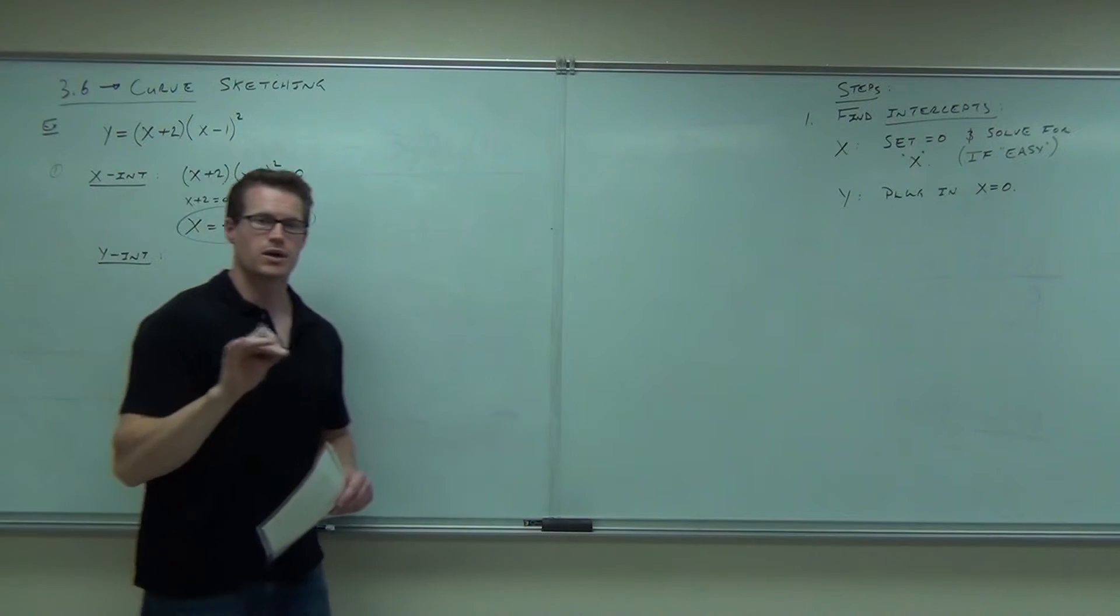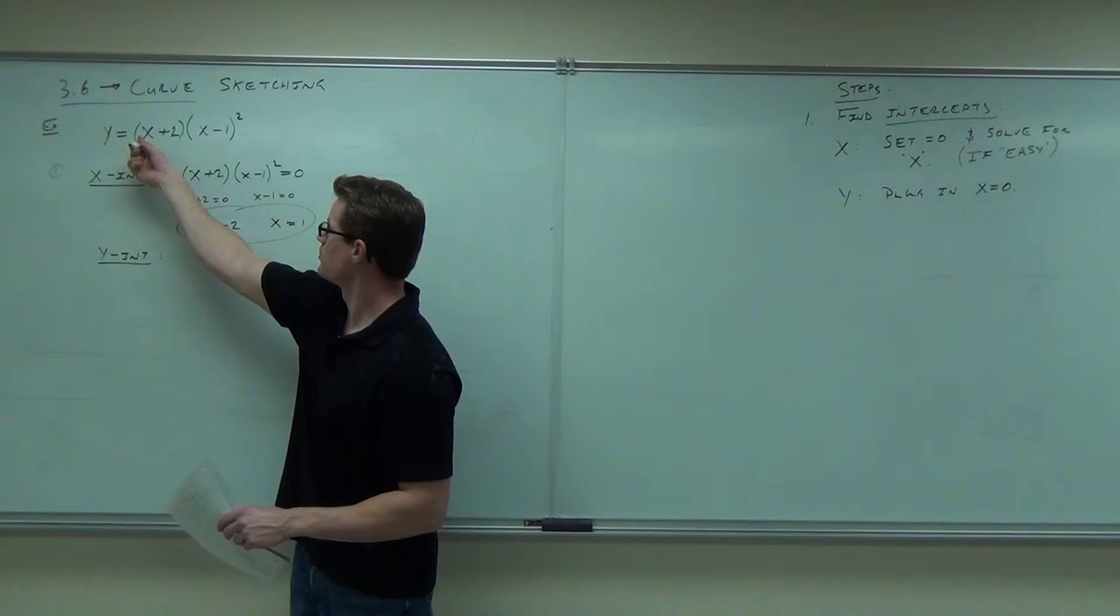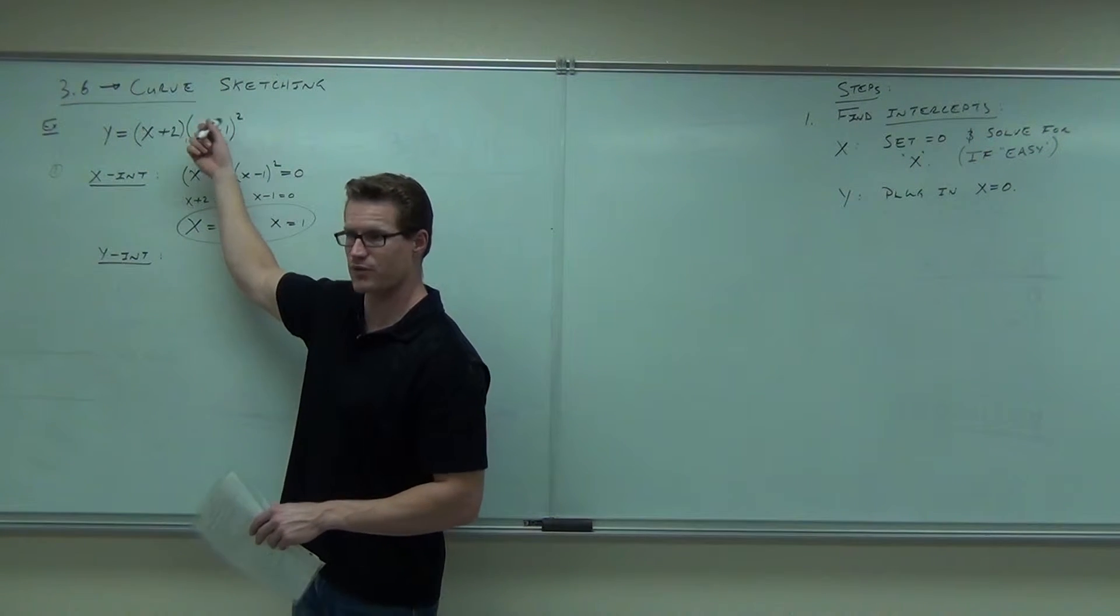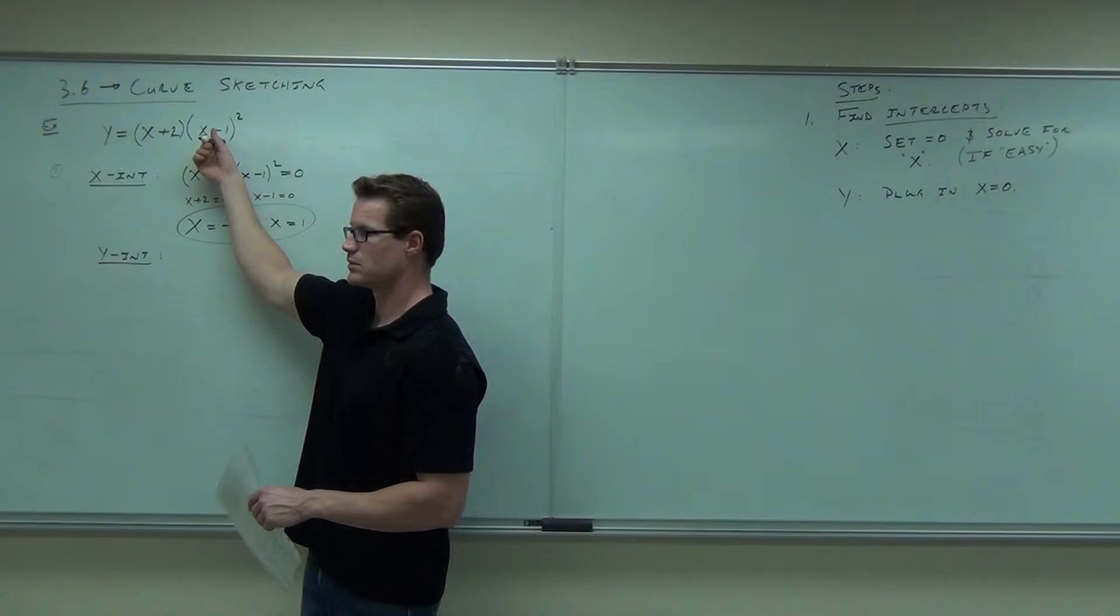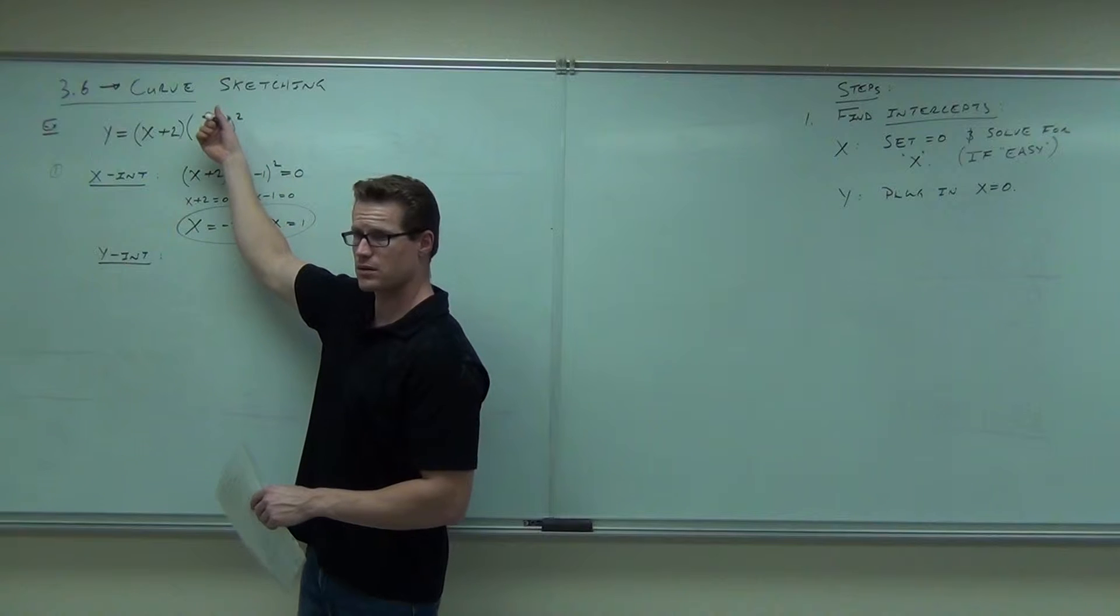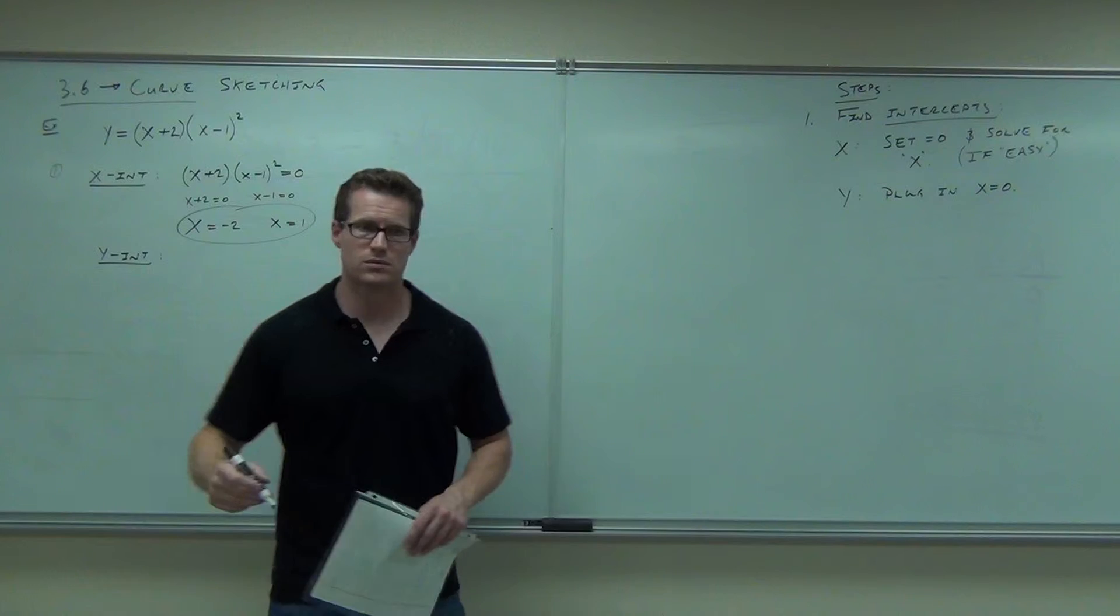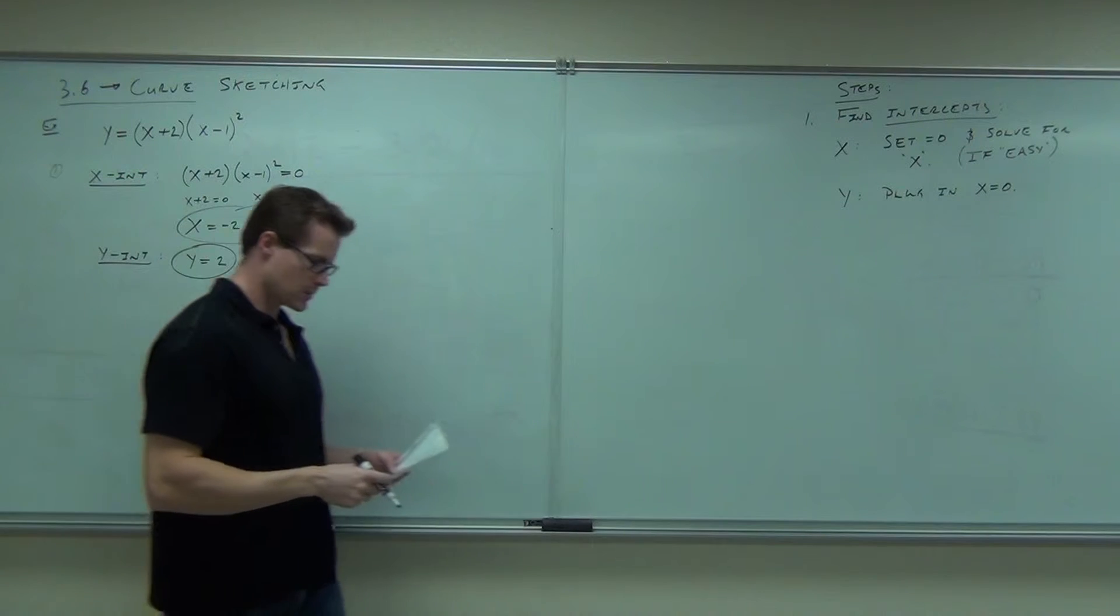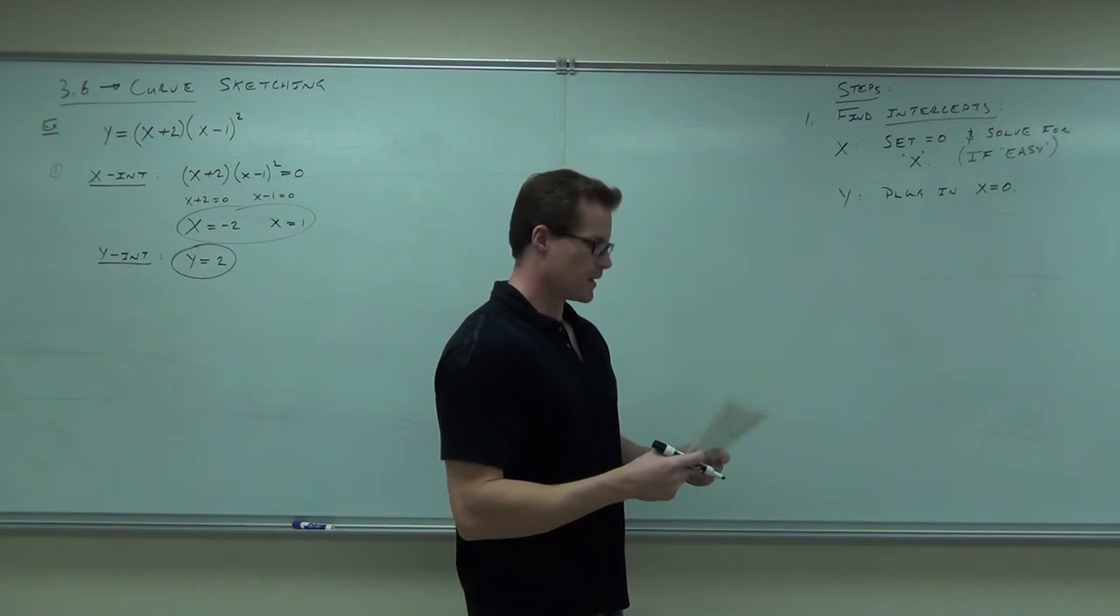Part two of step number one is find your Y-intercept. Y-intercept says you need to plug in zero for X and see what you have. So I'm going to take zero plus two times zero minus one squared. Don't forget to square it before you multiply. What is zero minus one? Negative one squared times this? Two. You get two. The Y-intercept is two.